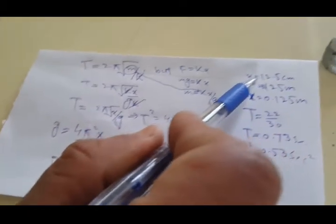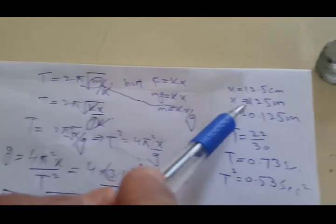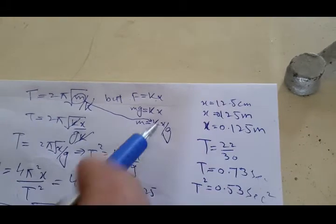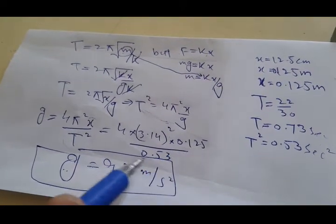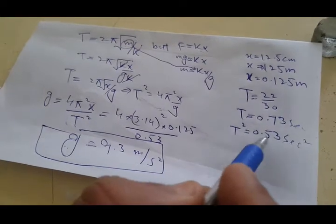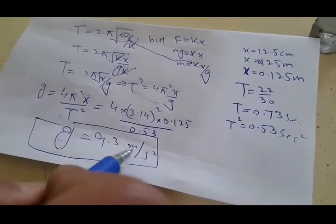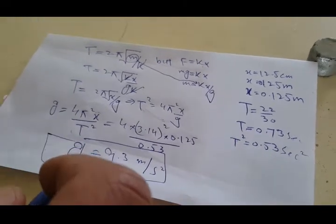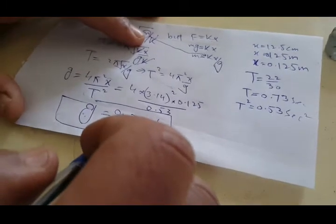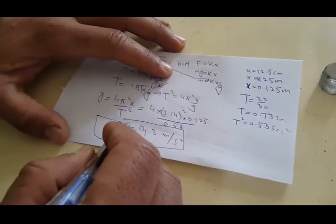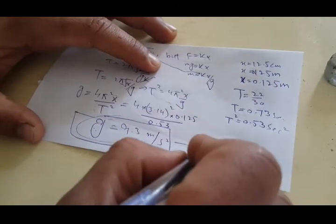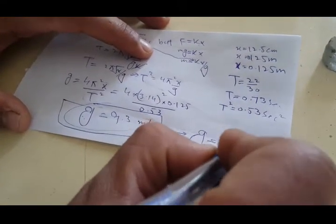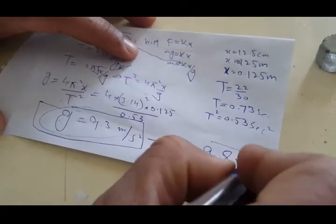With π = 3.14, the extension x = 0.125 meters, and T² = 0.53 s², substituting these values gives g = 9.3 m/s². This is the value of g — the free-fall acceleration or acceleration due to gravity. The answer is not exactly the same as the ideal value of 9.8 m/s².